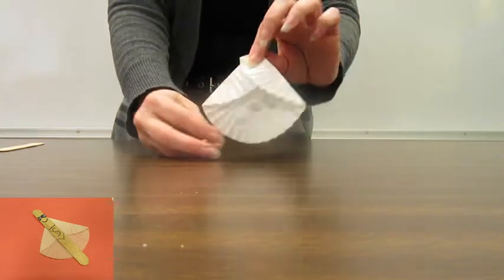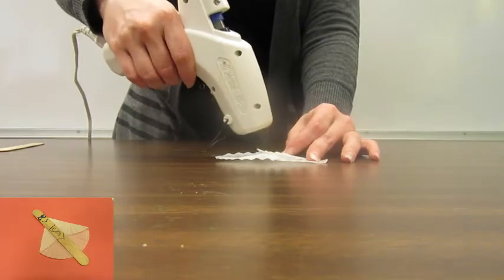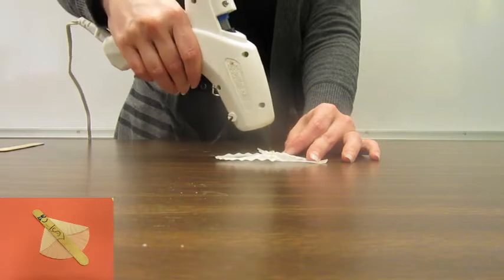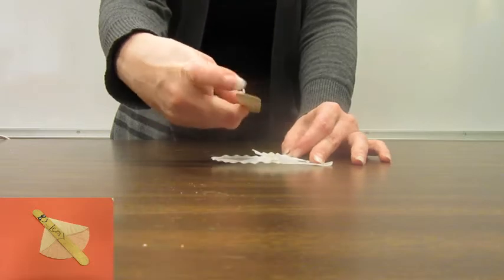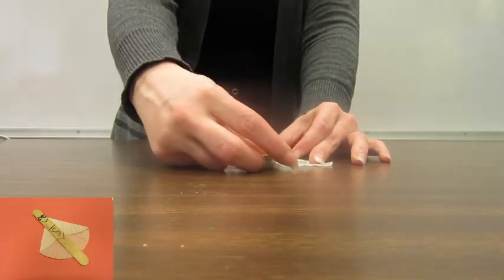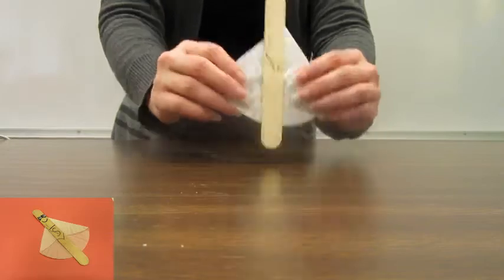This is going to be your superhero's cape. Next, I'm going to take my glue, put a line right down the middle. And put my popsicle stick right on top of that. I'm not going to put it directly at the top because I want to make sure that my superhero has a head.